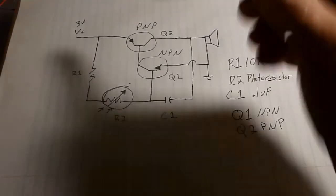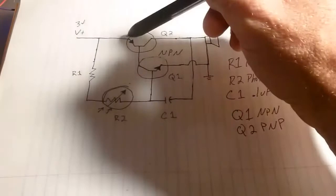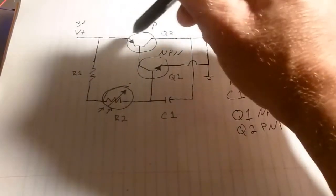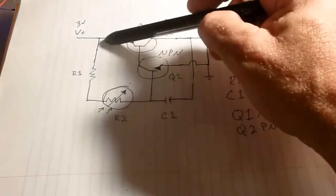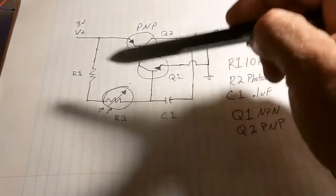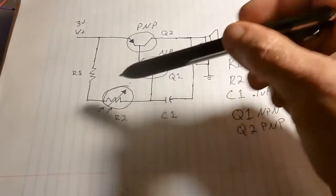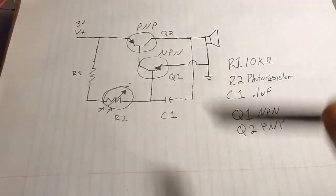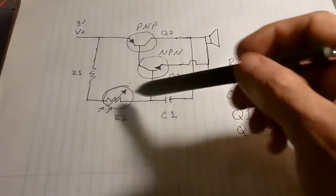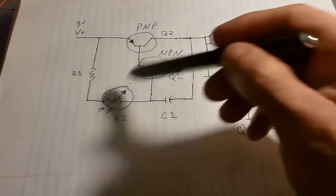What we have with the circuit is you're going to have current that's going to want to flow this direction to the PNP transistor, but it's going to be off so it can't go anywhere. So then you're going to have current that's going to flow down this way through this resistor, through the photoresistor. Remember photoresistors, while it's dark they have a very high resistance, and as it gets more light it'll have less resistance.